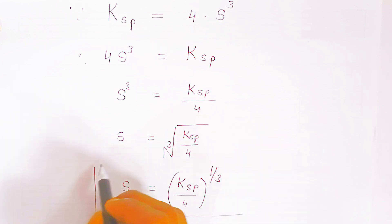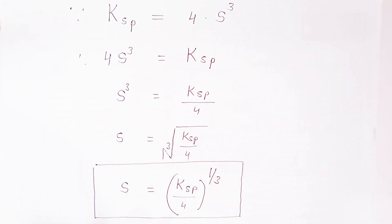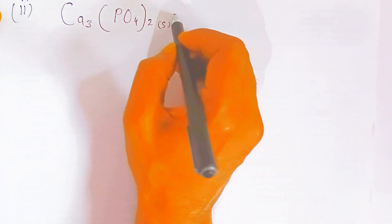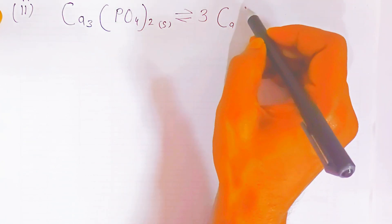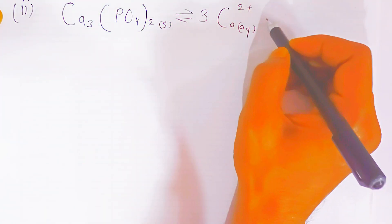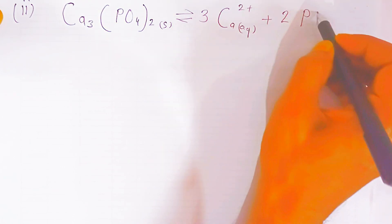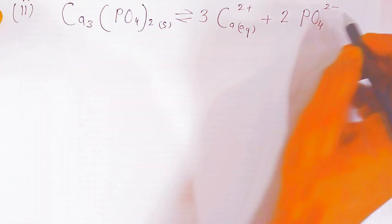Now for the second salt, calcium phosphate, which is Ca₃(PO₄)₂. In aqueous solution it gives three calcium cations (Ca²⁺) and two phosphate anions (PO₄³⁻). So we are getting three cations and two anions in the aqueous system.